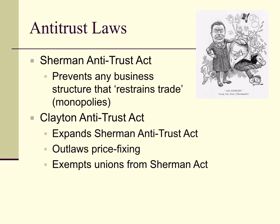The Clayton Antitrust Act expanded the Sherman Antitrust Act further and outlawed price fixing — where big monopolies would set prices so low that smaller companies couldn't compete. It also exempted unions from the Sherman Act, meaning unions could no longer be considered monopolies, which was very helpful for the labor movement.